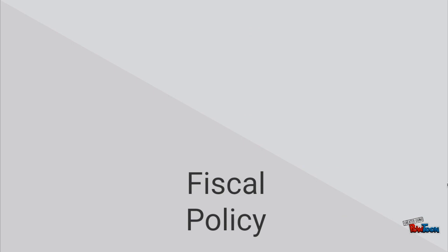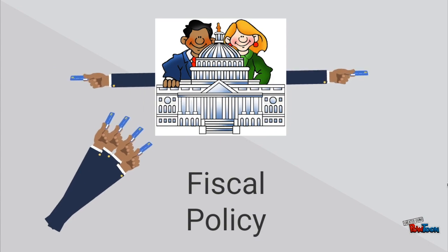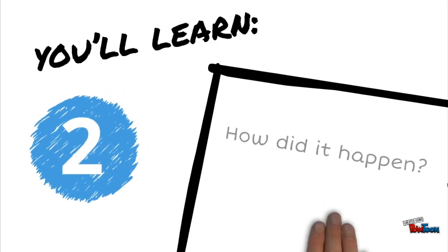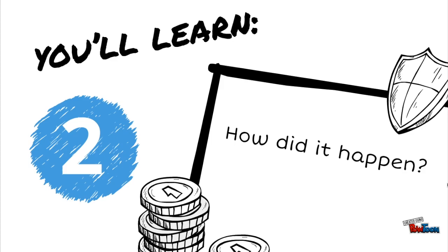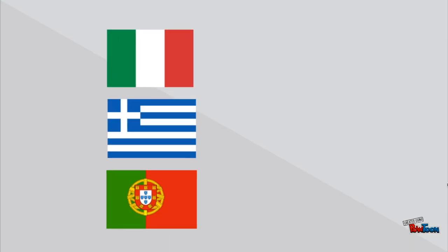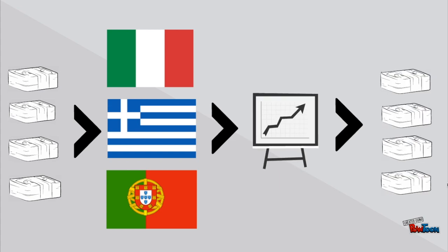On the other side, fiscal policy controls how much a government collects in taxes and how much of this it spends. If the administration spends more than what it collects, this extra amount becomes a deficit. Countries such as Greece, Italy and Portugal would then borrow money to increase growth and then borrow more money to pay for those previously made debts.